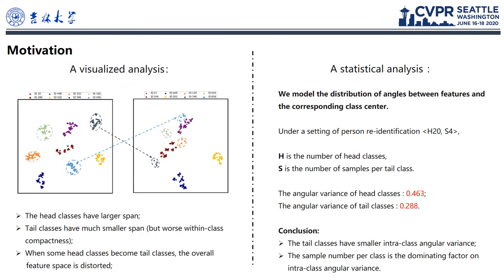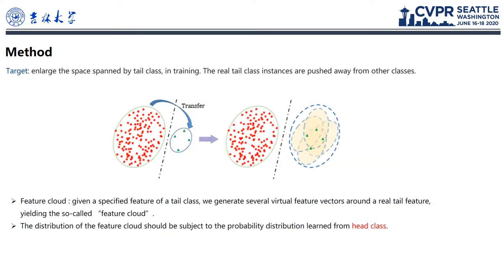We find that the sample number is the dominating factor on the vision class diversity. We propose a method to generate several virtual features around a tail feature. We term it Feature Cloud. The distribution of Feature Cloud is learned from head data.